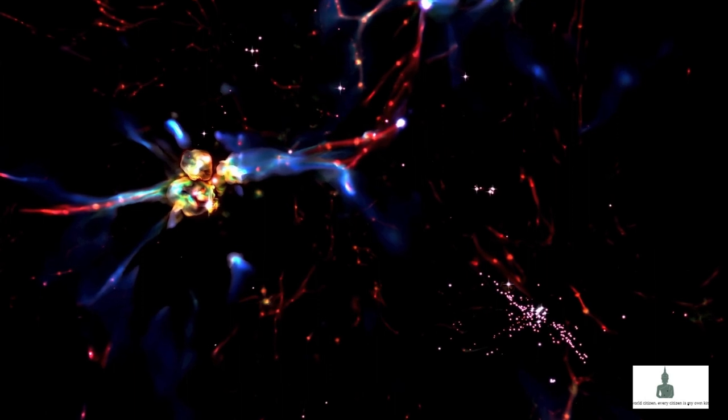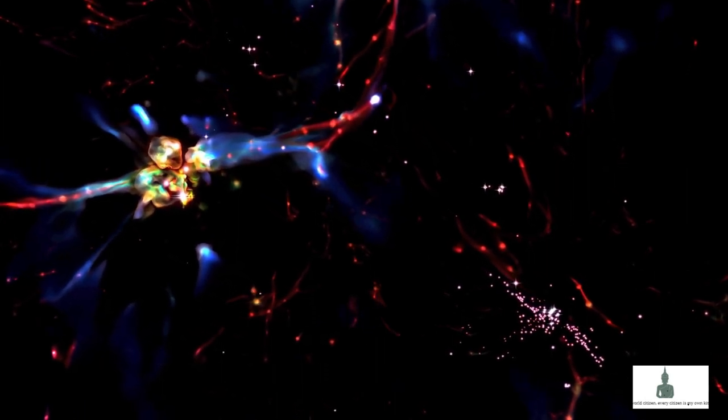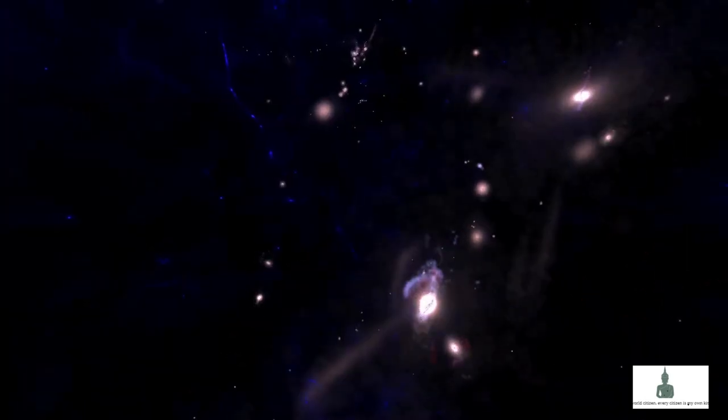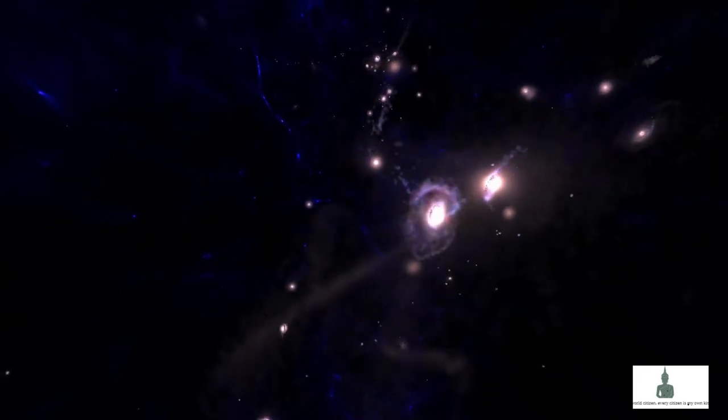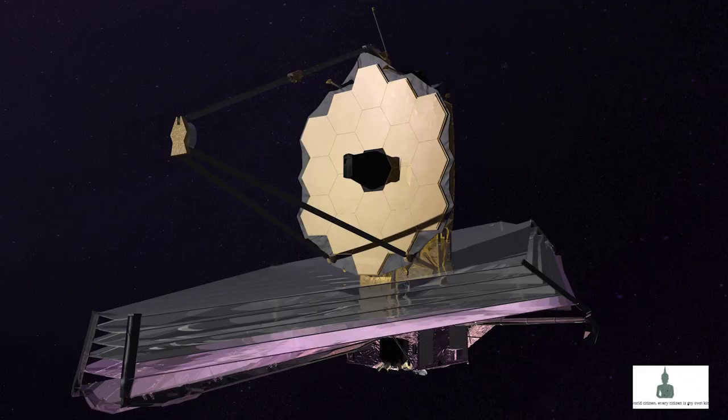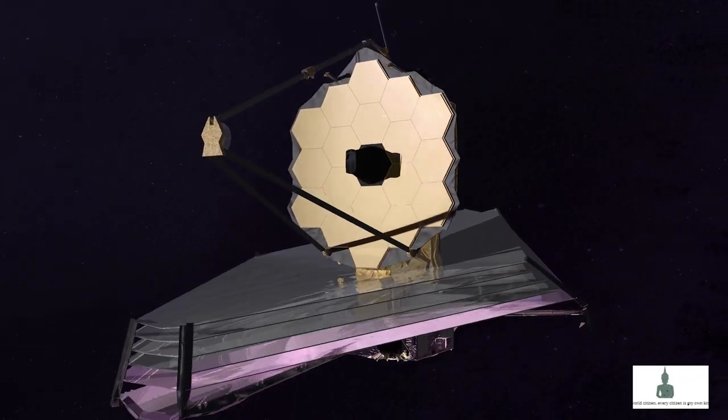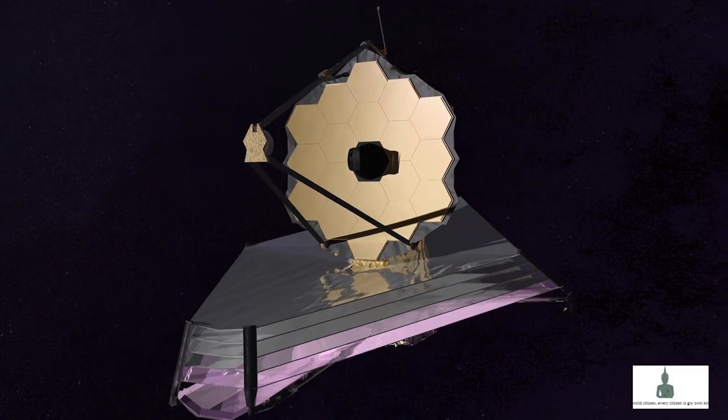That whole process of galaxies forming and evolving over 13 plus billion years - we've learned a lot about that, but we're really missing a key piece of the puzzle, which is how galaxies got their start. So that's the piece that we haven't seen yet, and that's the piece the James Webb Space Telescope will allow us to see for the very first time.